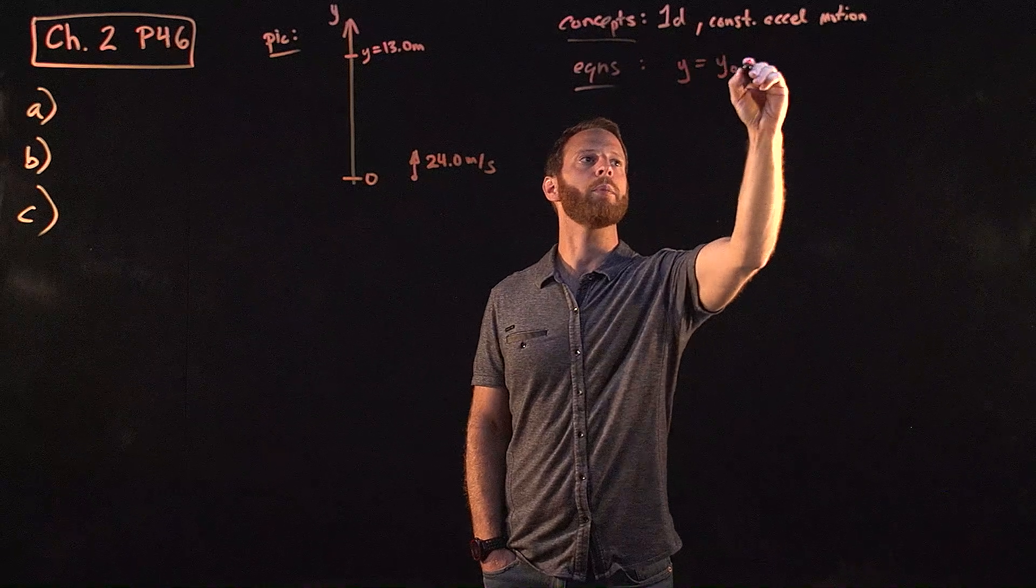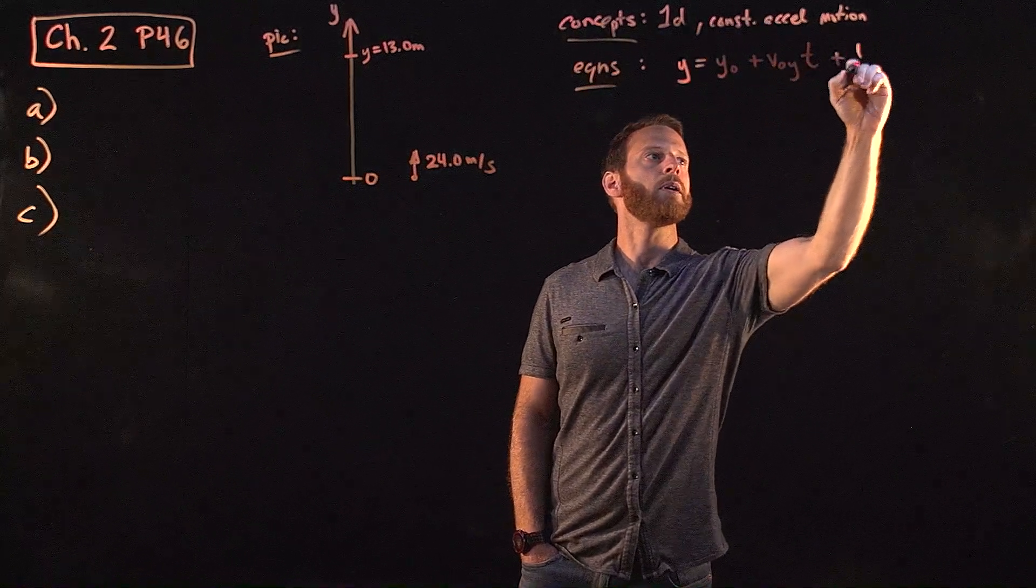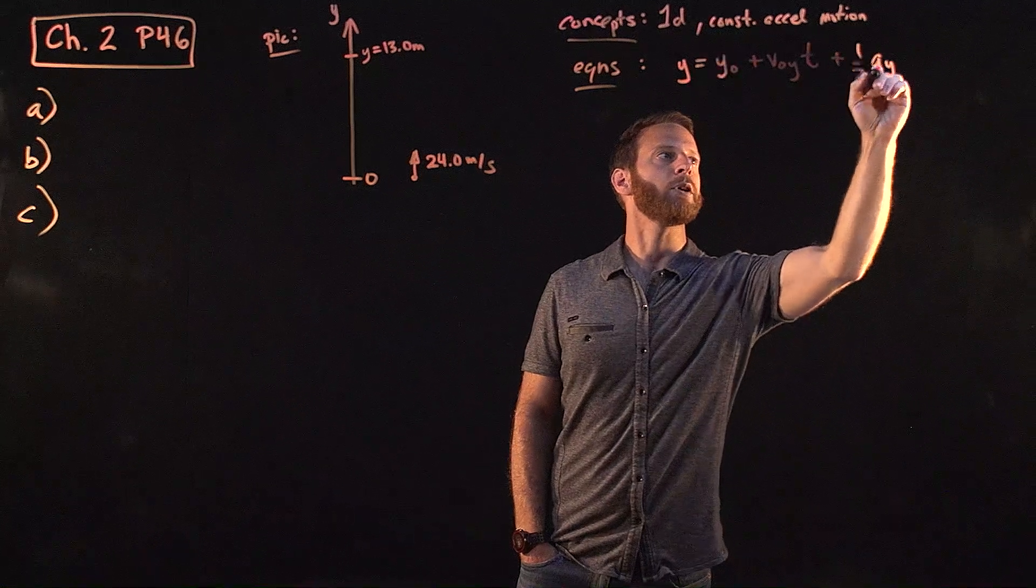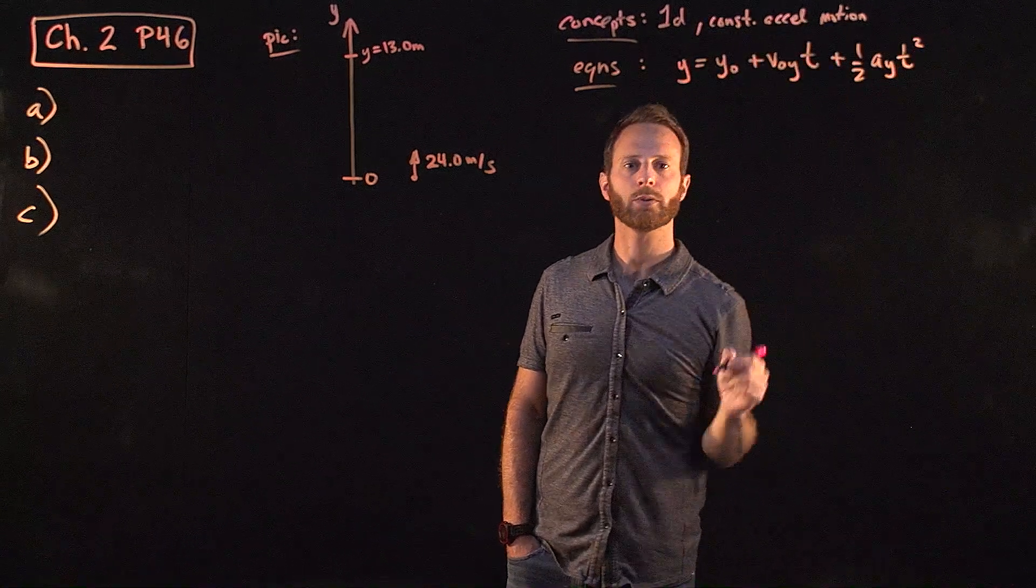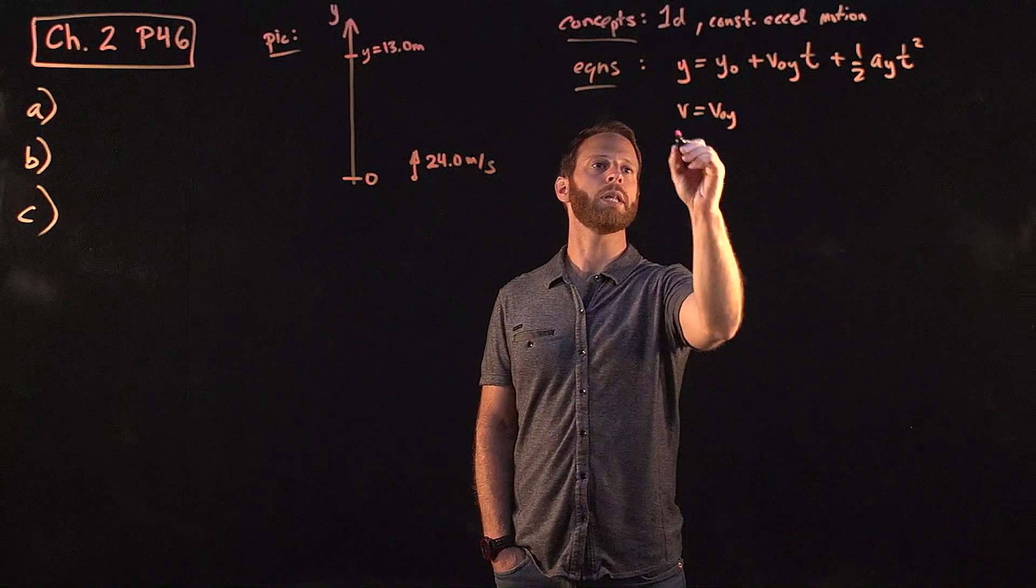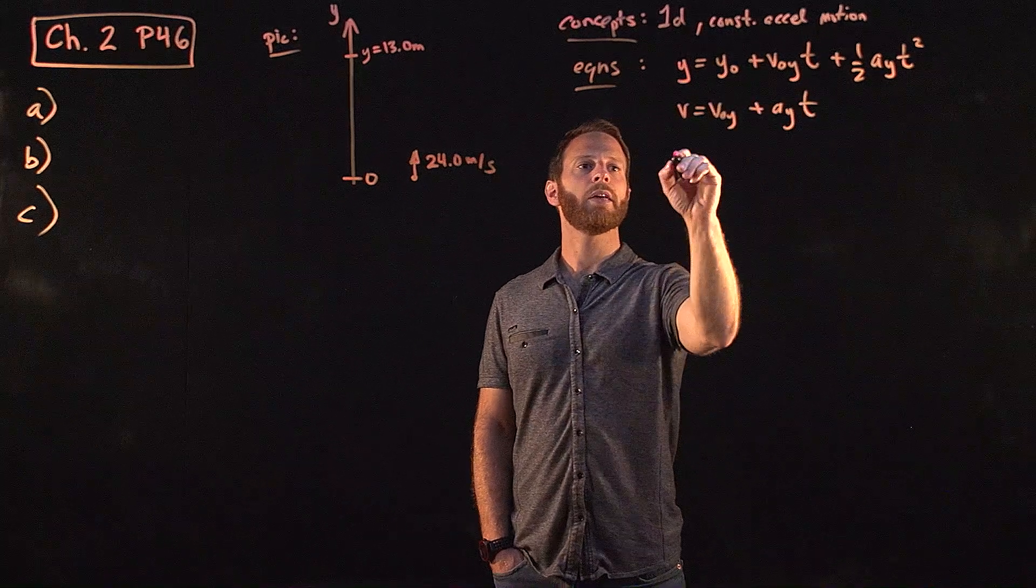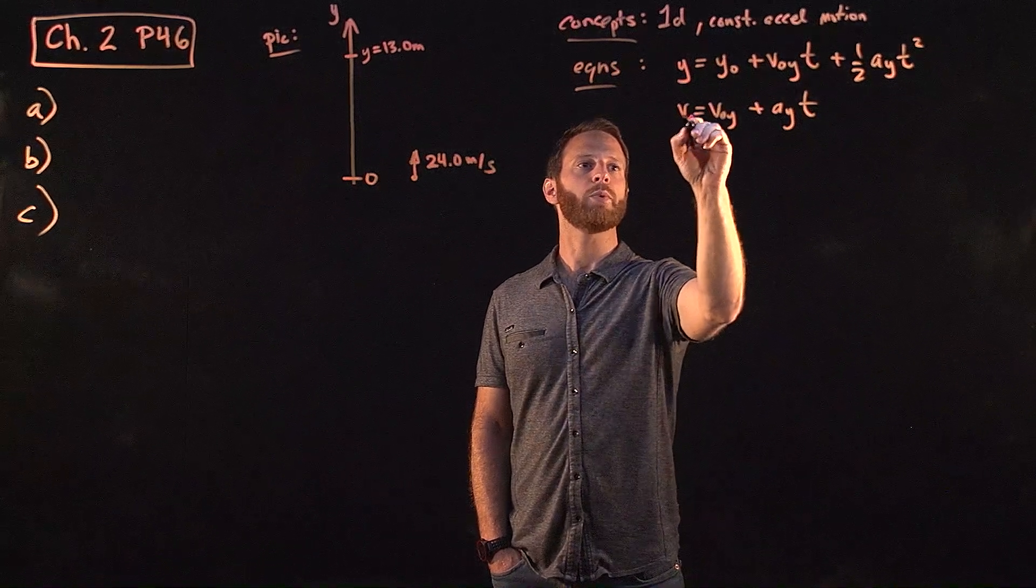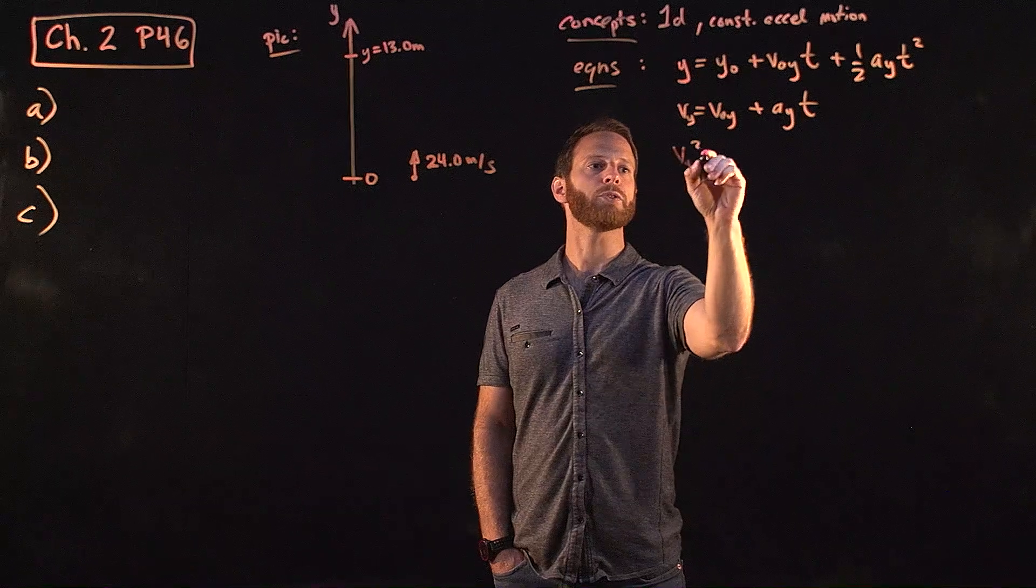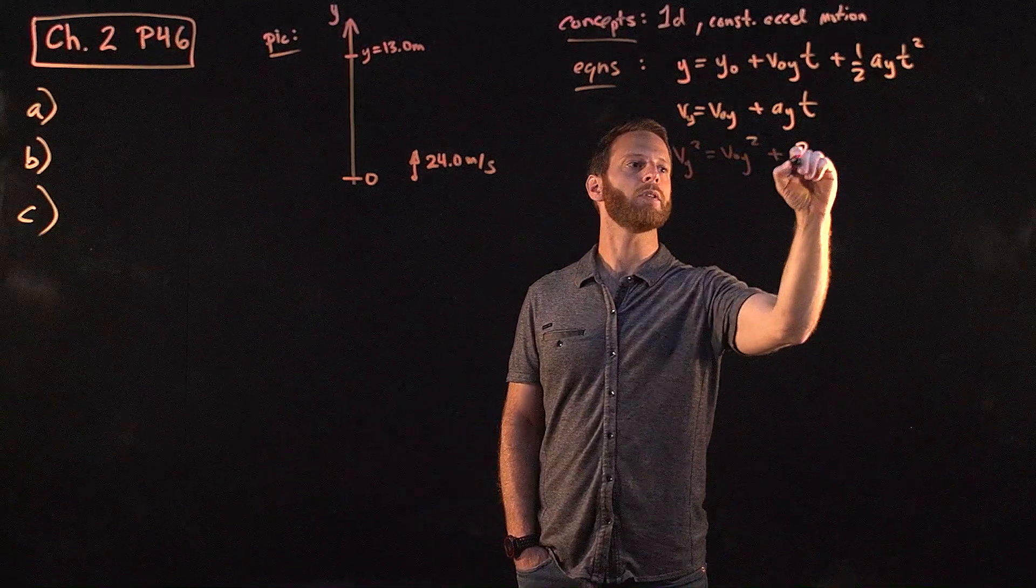y is equal to y0, the initial y position, plus the initial y velocity times time, plus one-half the acceleration in the y direction, time squared. The velocity obeys this equation. The later velocity is equal to the initial velocity plus acceleration times time. And then that third equation that we can get from combining the first two, the one that's quadratic in the velocities.